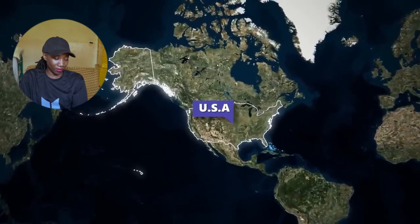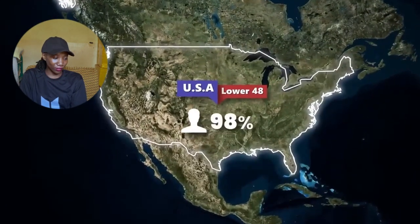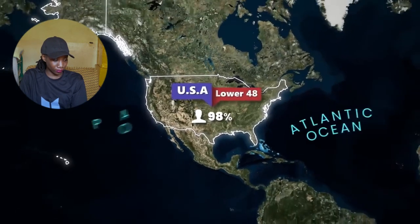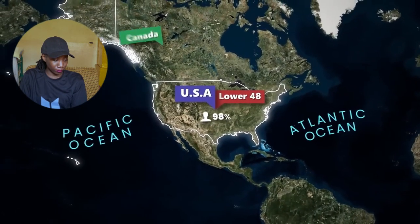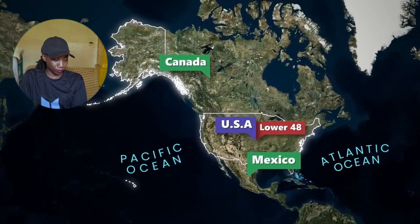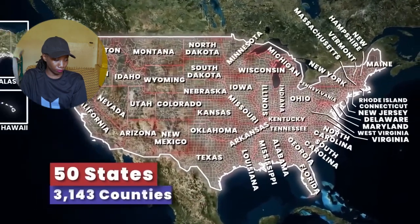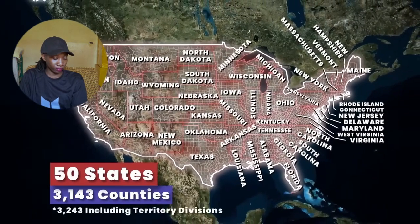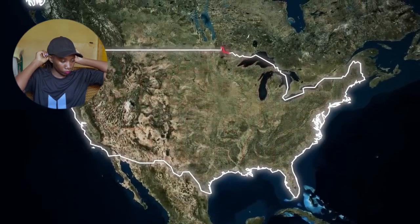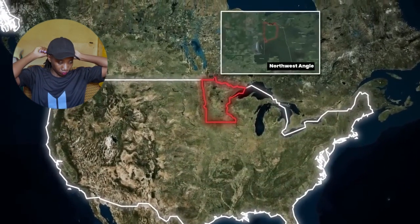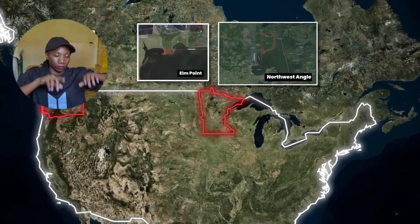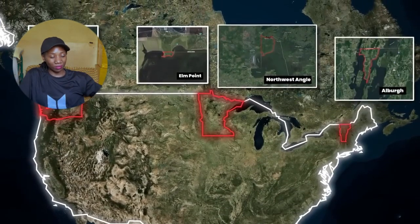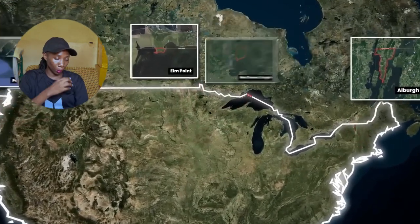The USA is located on the North American continent. The main chunk of the country, known as the lower 48, where 98% of the population lives, is sandwiched between the Atlantic and Pacific Oceans to the east and west, with Canada and Mexico bordering them on the north and south. The country consists of 50 states divided into 3,143 counties or county equivalents — 3,243 if you include territory divisions.